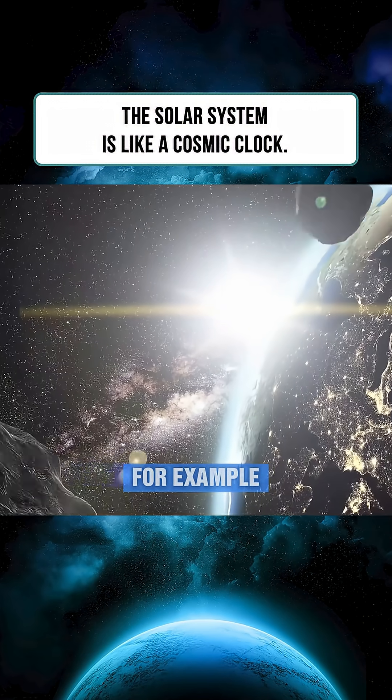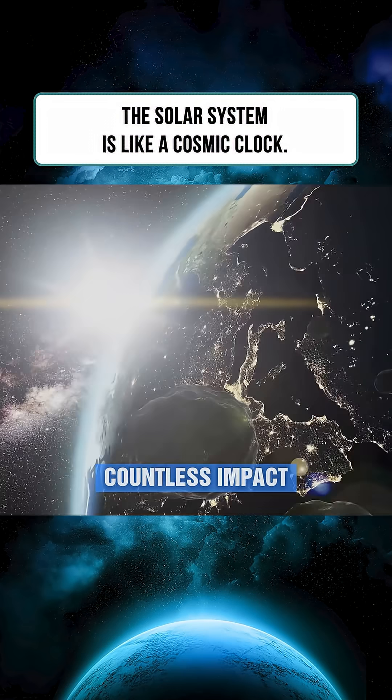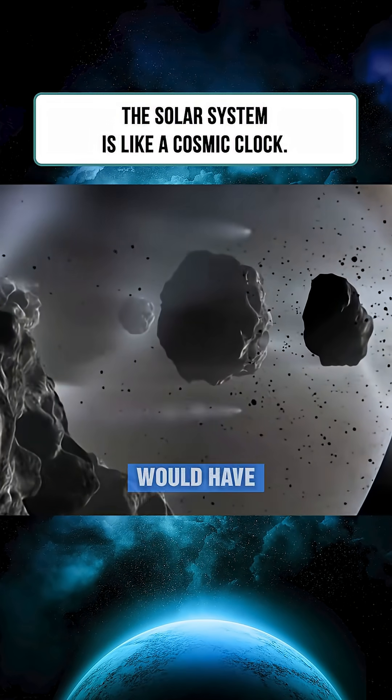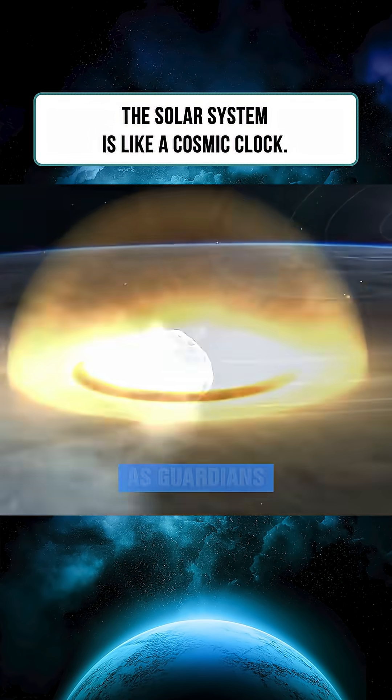Take Earth, for example. Our planet possesses a natural satellite, the Moon, which bears countless impact craters. Many of these craters are the result of objects that would have otherwise struck Earth. Throughout history, celestial bodies like Jupiter have acted as guardians, protecting our planet from potentially catastrophic collisions.